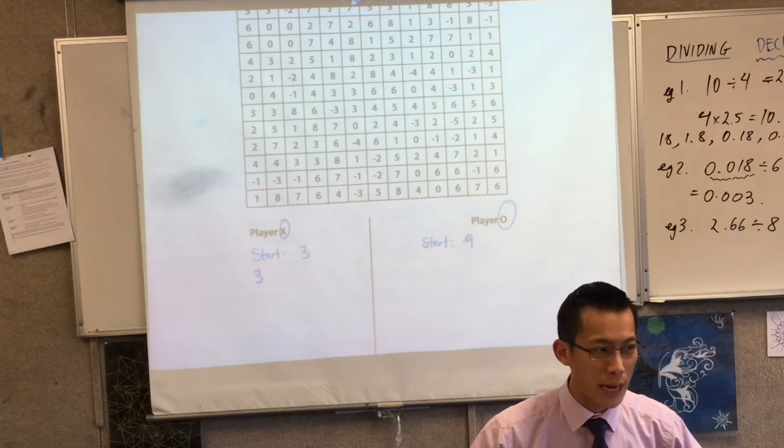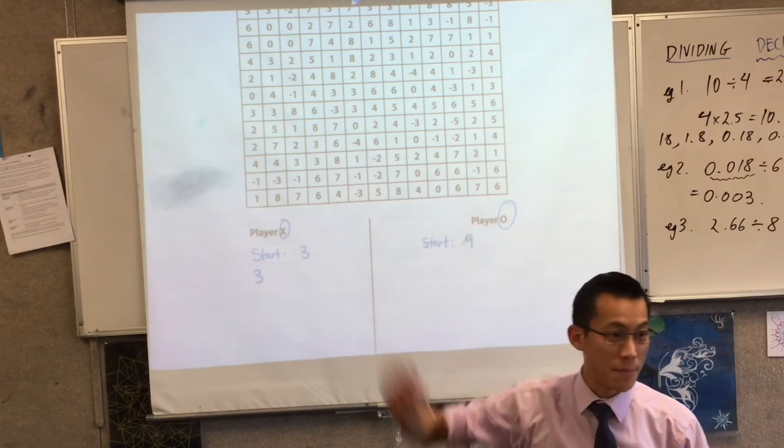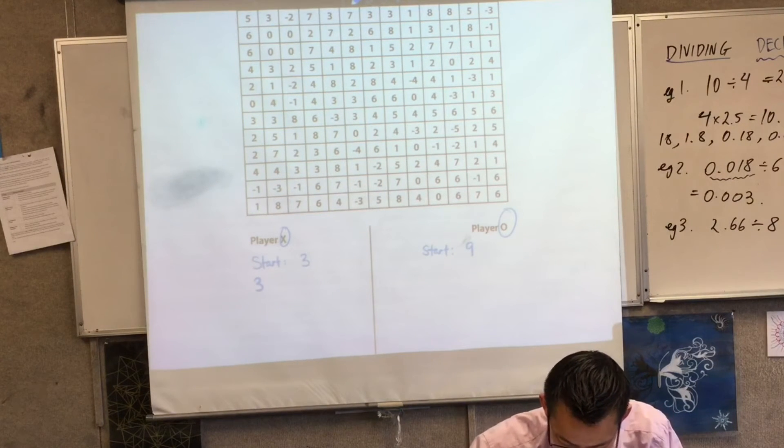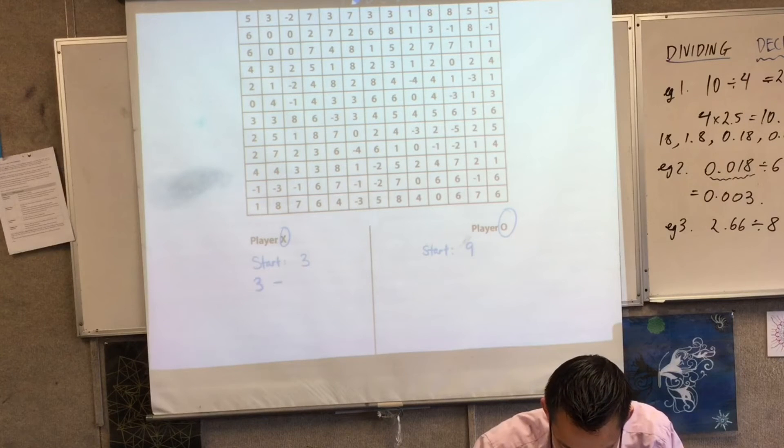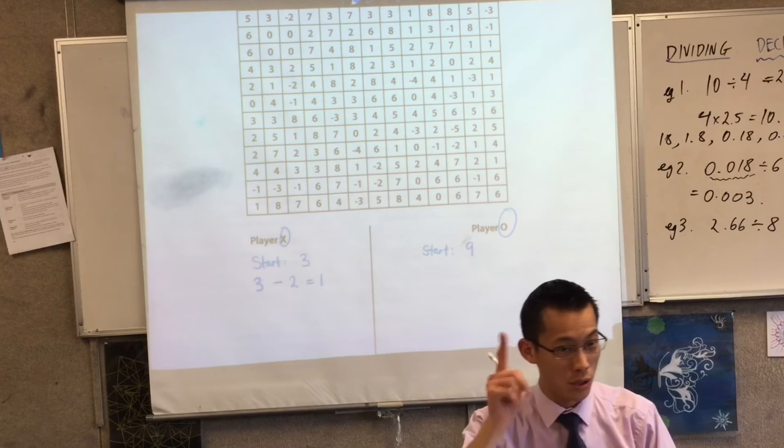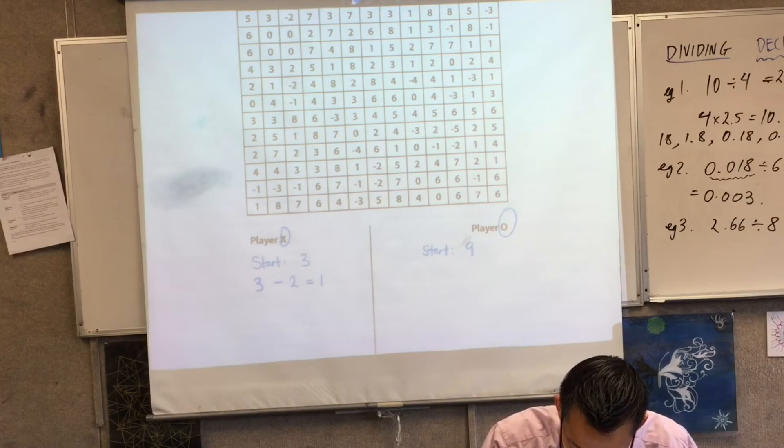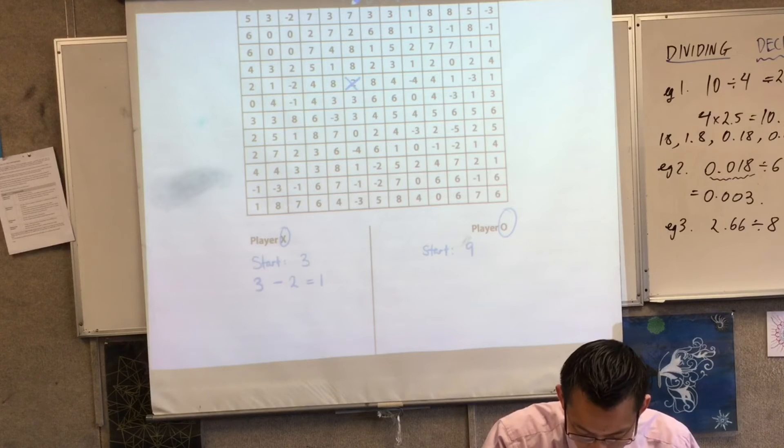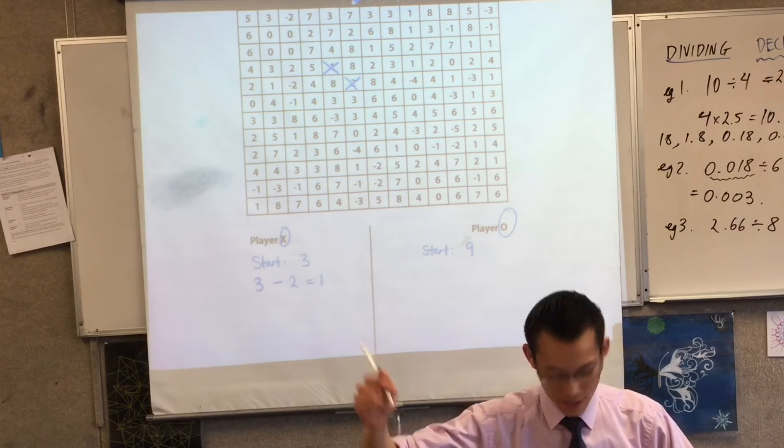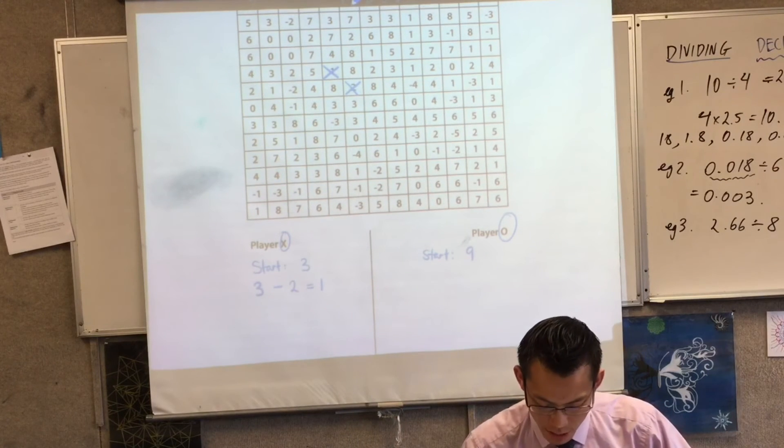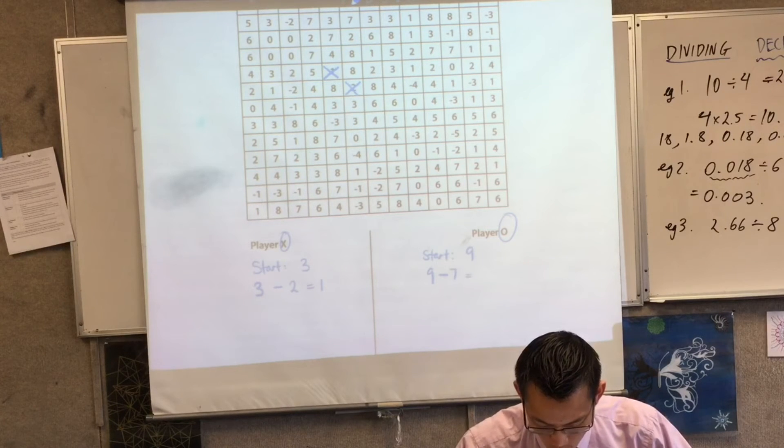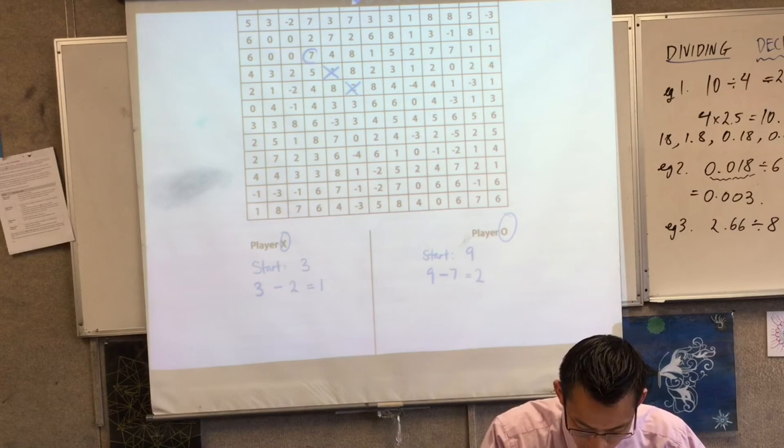And then I get to choose an operation based on the numbers that are up there. I want to get things in a row, so I'm going to go with three minus two equals one. The two numbers I chose were two and one. So I see there's a two and a one there. Can you see what I've done? It's the other player's turn. They've got a nine, so I'm going to go nine. I want to block that guy. I'm going to go nine take away seven equals two, so I'm going to put a seven and a two.